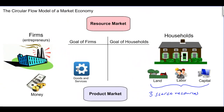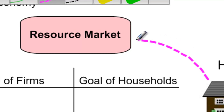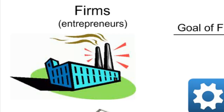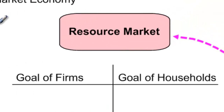Households possess three productive resources — land, labor, and capital — which must be exchanged in the resource market. The first flow in our circular flow model is the flow of resources from households to firms in the resource market. Firms are entities established by entrepreneurs who wish to start a business to make money, and they need resources from households in order to do so.